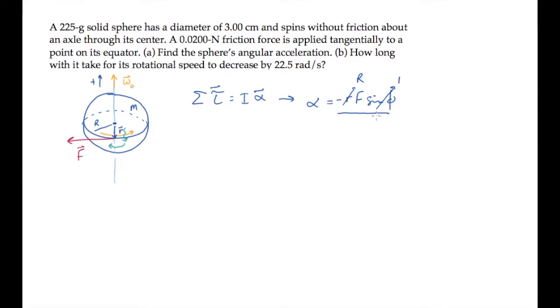We divide this by the moment of inertia for a solid sphere, that's 2 fifths MR squared. And simplify to see that alpha is negative 5 halves, the force divided by the mass times the radius. Substitute values and calculate to see the angular acceleration alpha is negative 14.8 radians per second squared.